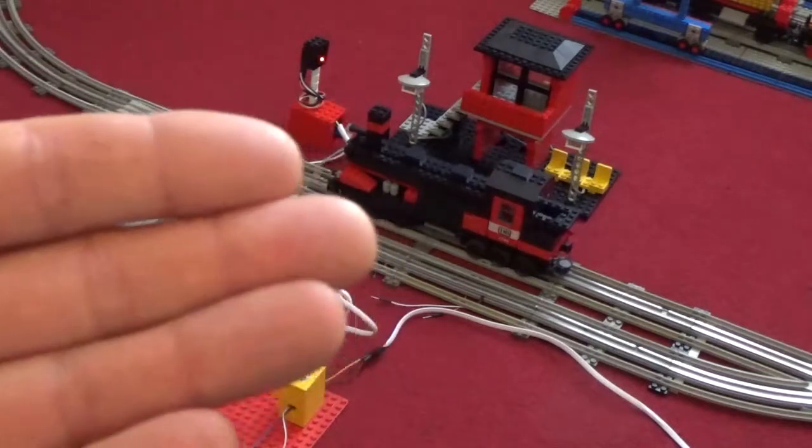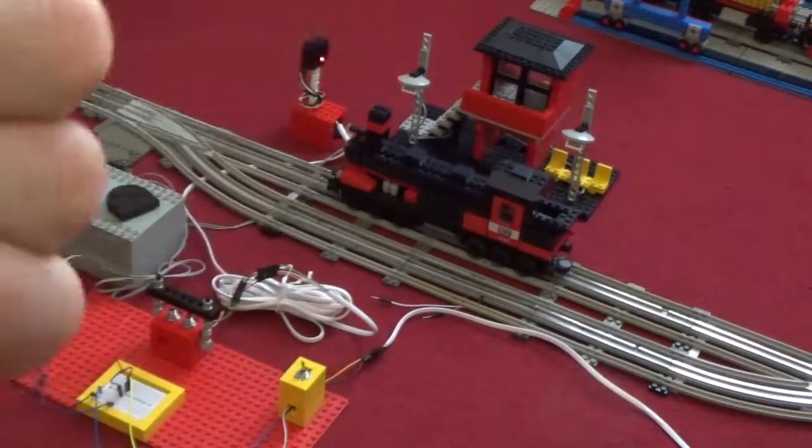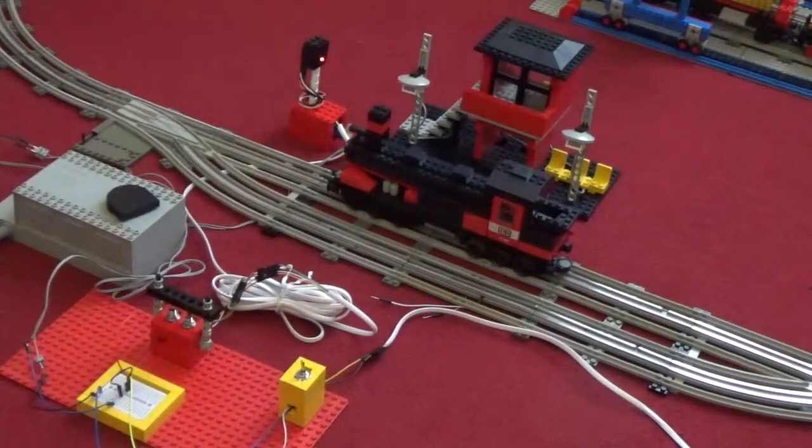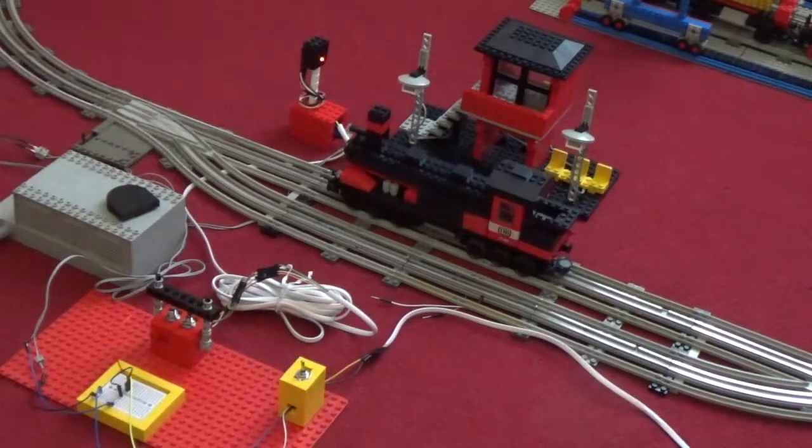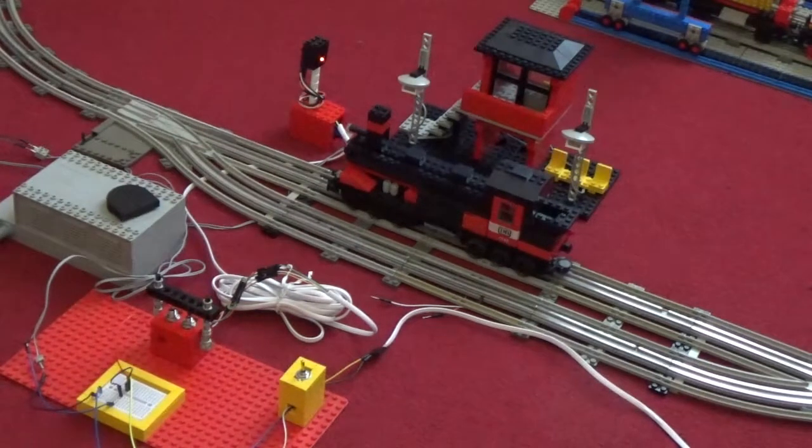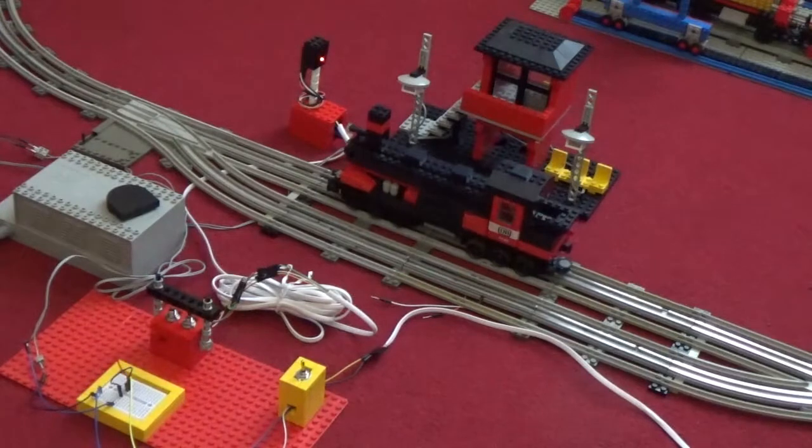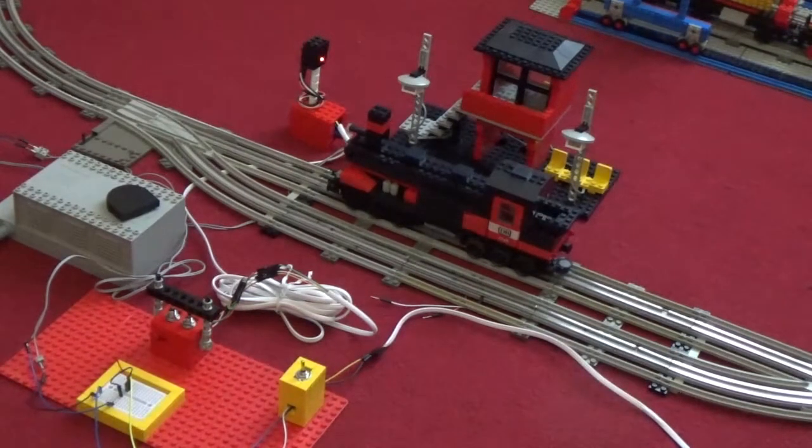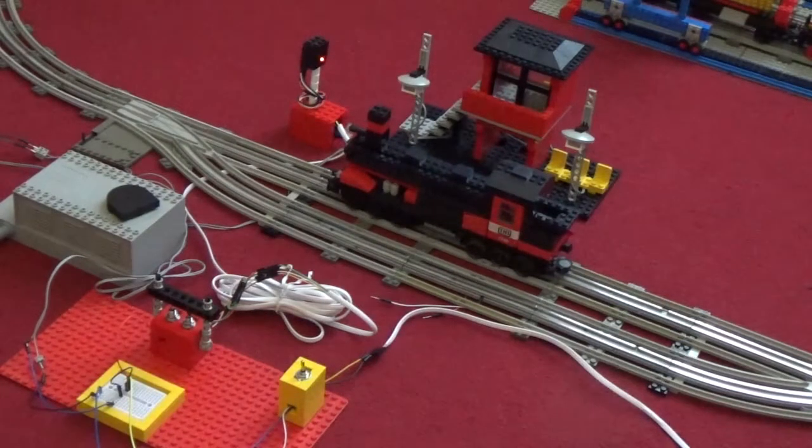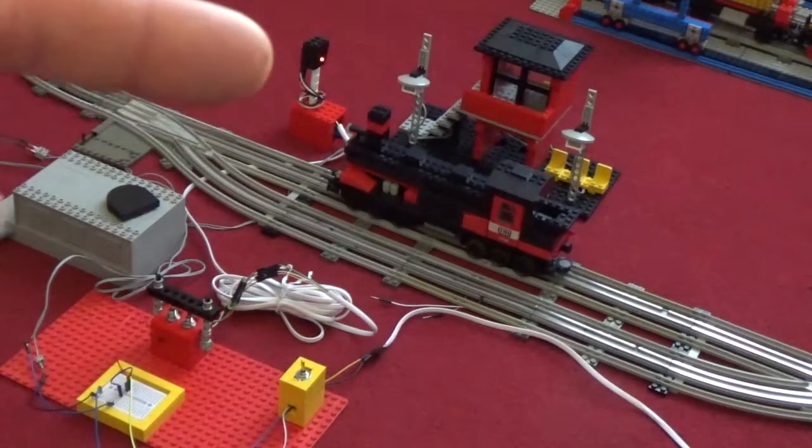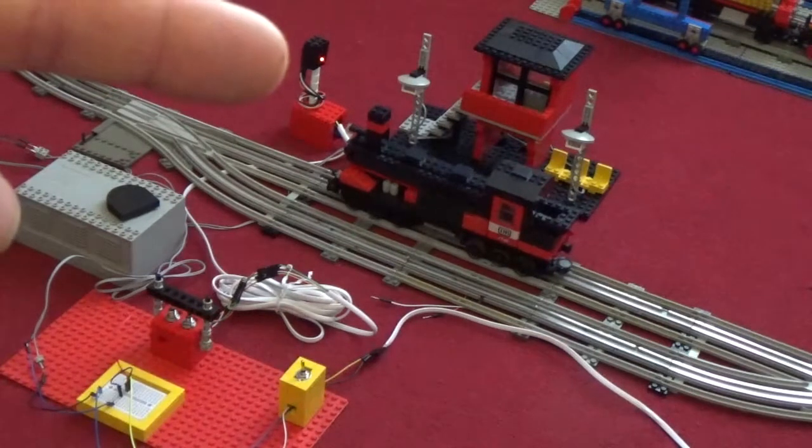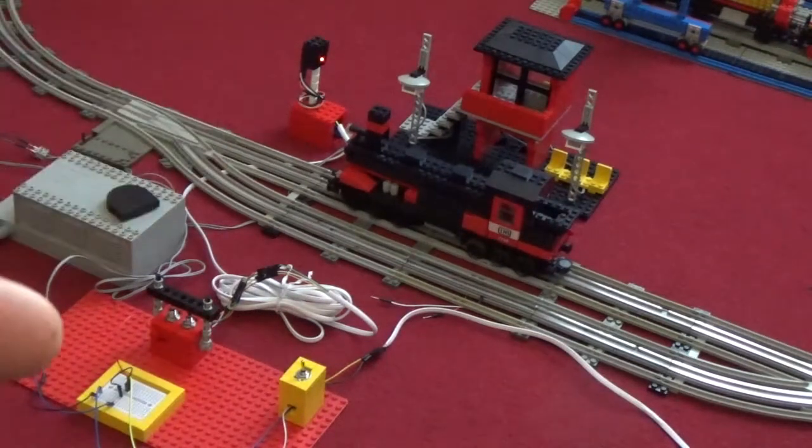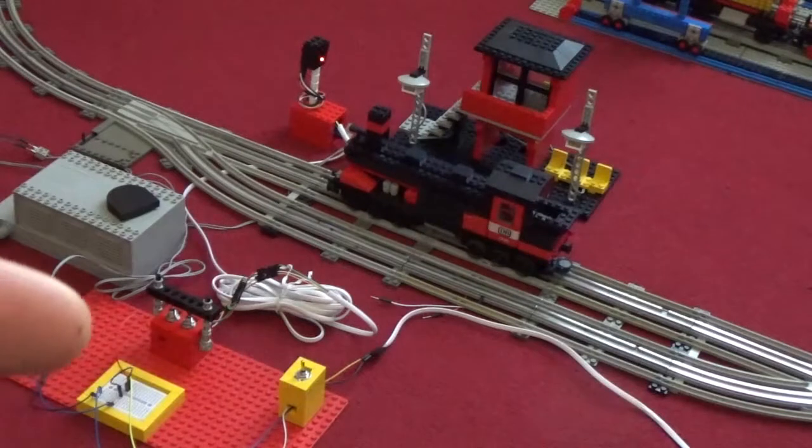So let's move on to the demonstration. As you can see here, I have my 7745 waiting at the station. This is the second model that you see, that is present in the instructions booklet, the second alternate build. You can see here there is the traffic lights that at the moment is on the red lights.